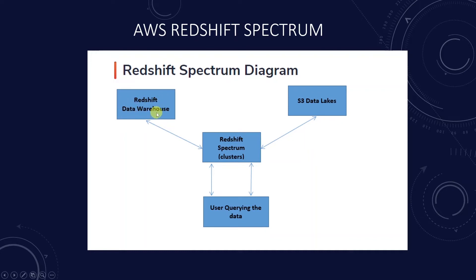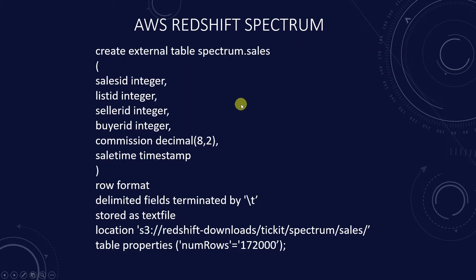We create and manage external tables in Amazon Redshift using Data Definition Language, or DDL. After our Redshift Spectrum tables have been defined, we can query and join the tables just as we do with any Amazon Redshift table. However, we cannot perform update operations on external tables. When we update our Amazon S3 data files, the data is immediately available for querying in Amazon Redshift.